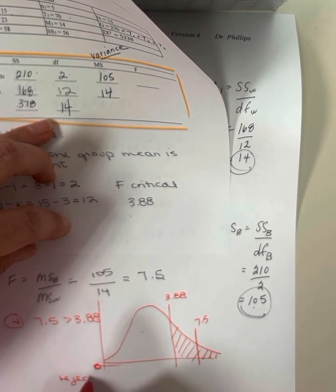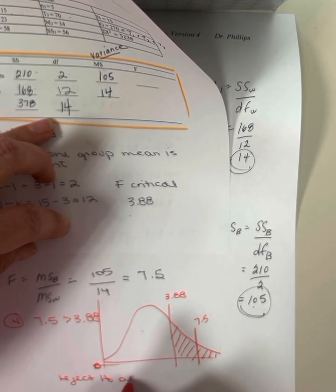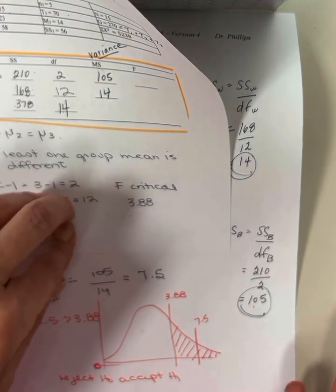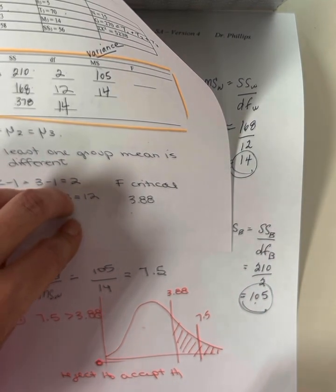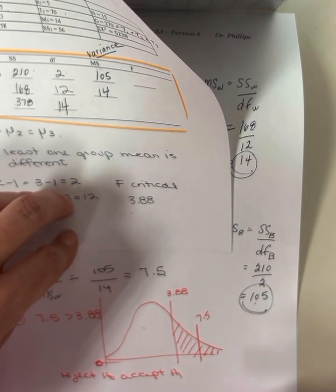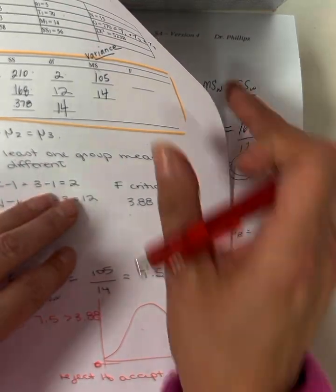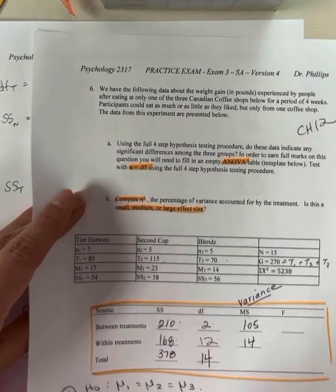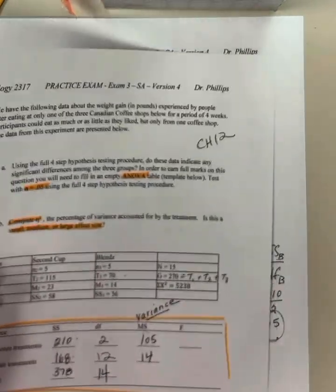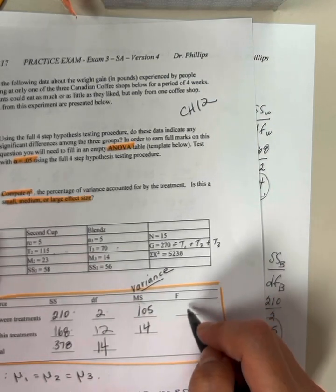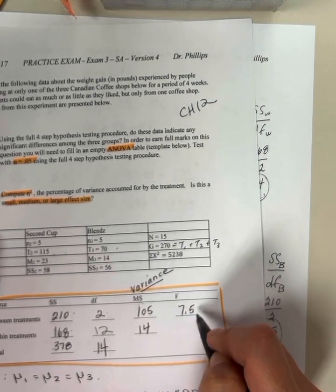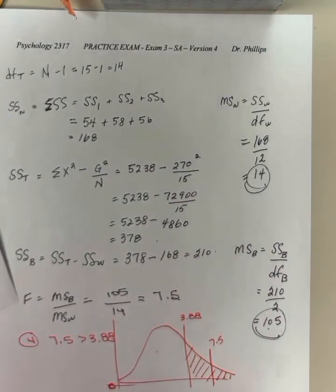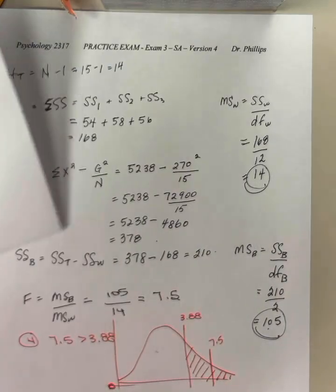Okay? So I reject the null, accept the alternate. I don't know which group is different. I just know that at least one of the groups is different from the others. They might all be different. I don't know without post-hoc tests. And this question does not ask me to calculate those. Right? So don't go doing extra stuff that you don't need to do. That's the last question, so if you're going to go overboard, at least you'd theoretically be done the rest of the exam.